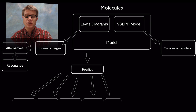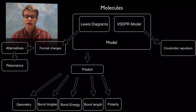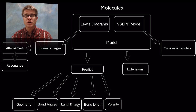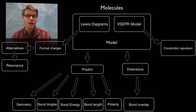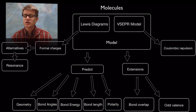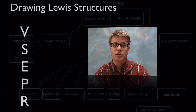These two together form a powerful model that we can use to predict geometry, bond angles, bond energy, bond length, and even polarity. Lots of times we'll have to extend it — it's just a model, not actually what the atoms look like. We can do extensions based on overlap of bonds, and sometimes it's confusing when we get odd valence electrons. So I'll present another theory called molecular orbital theory. I won't go into detail but I'll explain where that would be useful.